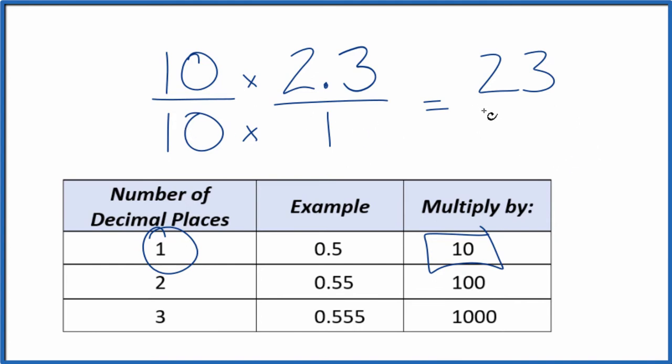So 10 times 1, that gives me 10. And now the decimal 2.3, that equals the fraction 23 tenths. And I really can't reduce this any further. This is in lowest terms.